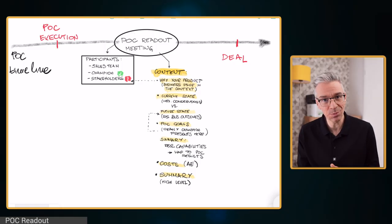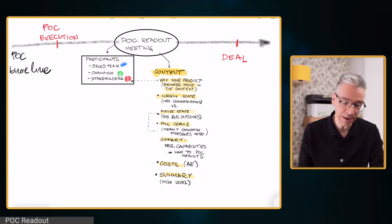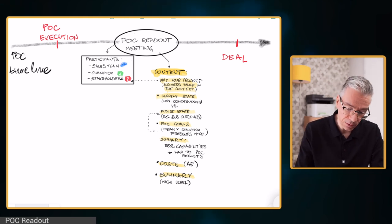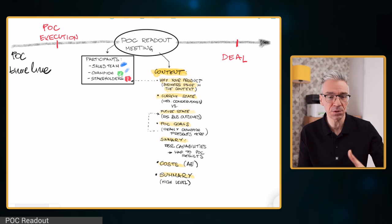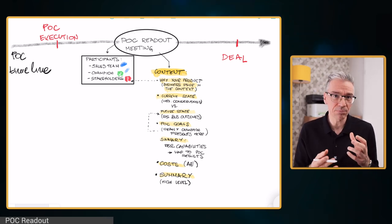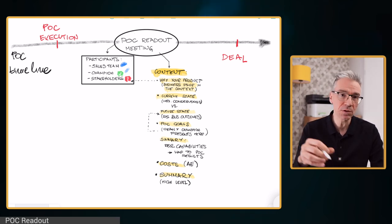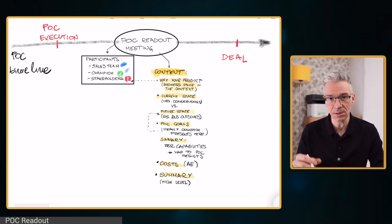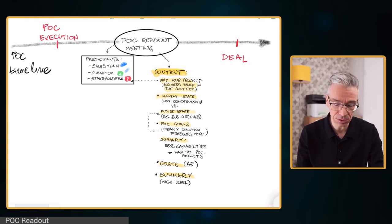For this meeting, because it's so important, we want to have the right participants. Of course we'll have the sales team and our champion, who was involved in the POC and knows what's been going on. But the stakeholders — we don't know if they were informed about the success of the POC. So we want the stakeholders, including the economic buyer and all others who have a saying in the decision, to be present at the meeting.